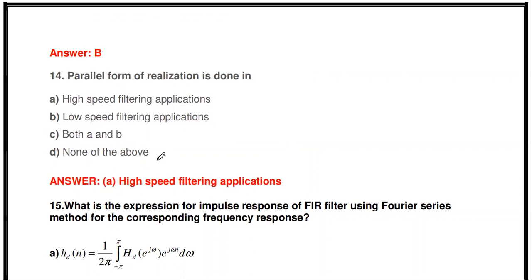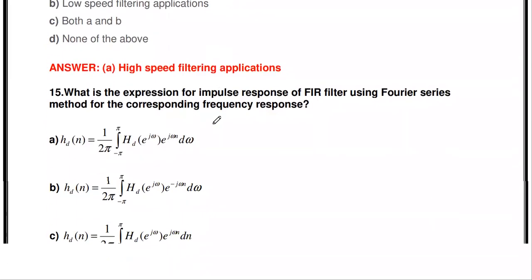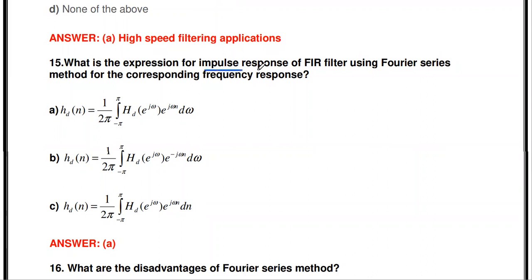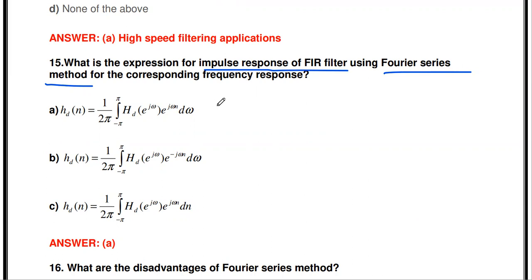Parallel form realization is used in high-speed filtering applications. Regarding the Fourier series method: for a given frequency response H_d(e^{jω}), the corresponding impulse response of the FIR filter is given by h_d(n) = (1/2π) * integral from -π to π of H_d(e^{jω}) * e^{jωn} dω.